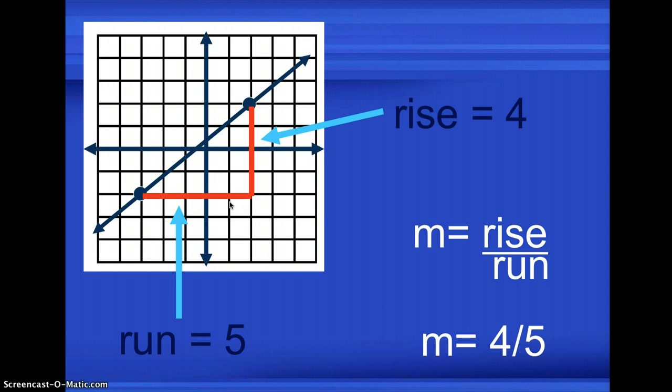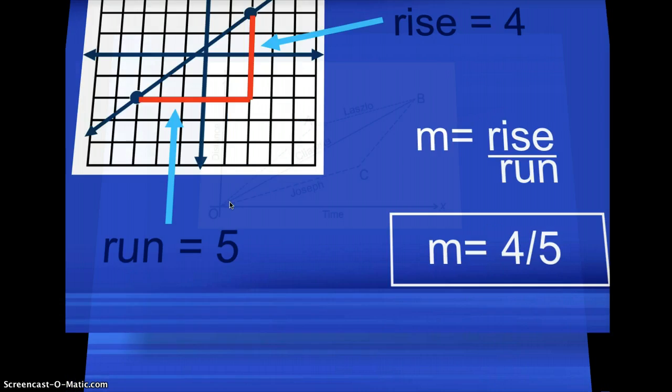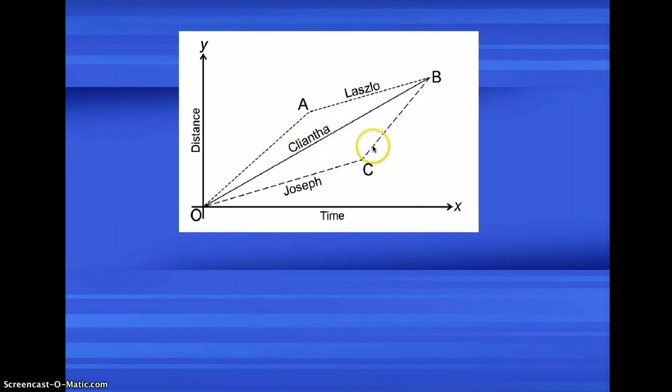Let's use another example where you are familiar with. Here is the graph that you use in your exploration or gradient exploration, given the three runners.